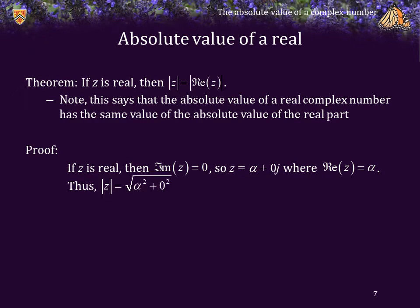Thus, the absolute value of z must be the square root of alpha squared plus 0 squared, which is just the square root of alpha squared, which is by definition, for a real number, the absolute value of alpha. But the absolute value of alpha is the absolute value of the real component of z, and so we are finished.